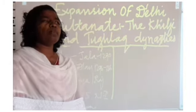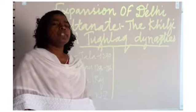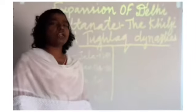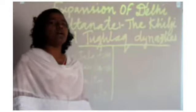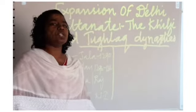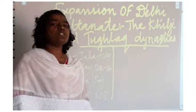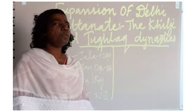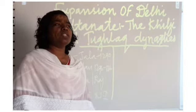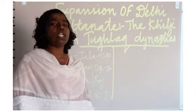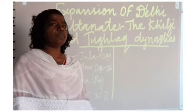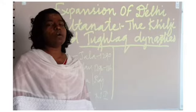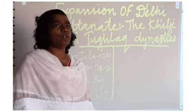In the Mamluk dynasty we saw the important rulers like Qutbuddin Aybak, Iltutmish, Razia Sultana. Then the Mamluk dynasty ended with Ghiyasuddin Balban. We saw the administration of Balban and everything.